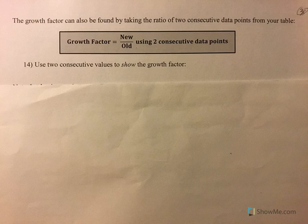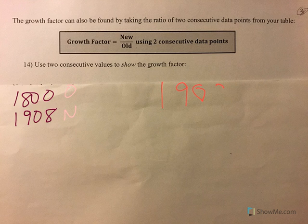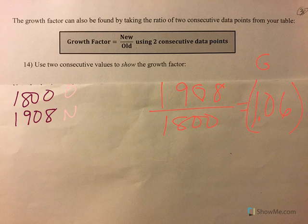We can also find the growth factor by taking new divided by old using two consecutive values. From our table, the first value was $1,800 and the second was $1,908. Dividing new by old — 1,908 divided by 1,800 — gives a beautiful answer of 1.06. That 1.06 is our growth factor: the 1 is representative of your initial amount ($1,800) and the 0.06 is the 6% by which you're growing.